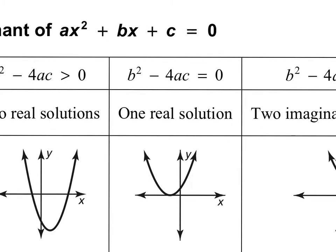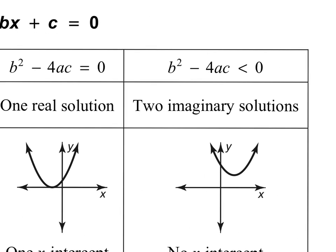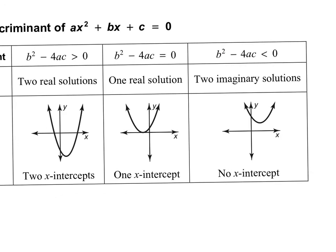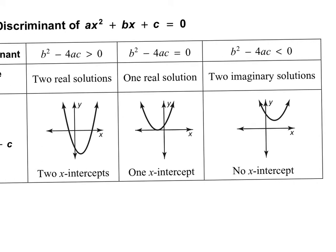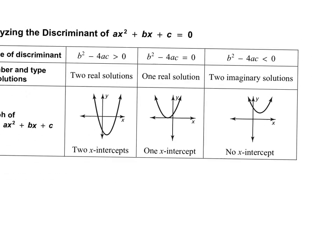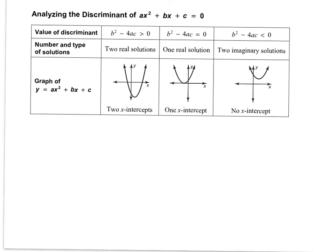And if you get a number that's less than zero — negative — your solutions will be imaginary. Remember, solutions are where the parabola crosses the x-axis. A positive discriminant means it crosses the x-axis twice. When you get zero, it just touches it once. And if you get a negative discriminant, you get imaginary solutions, which means there are no x-intercepts — the parabola does not cross the x-axis. It doesn't mean the parabola itself is imaginary; it just means it doesn't cross the x-axis.